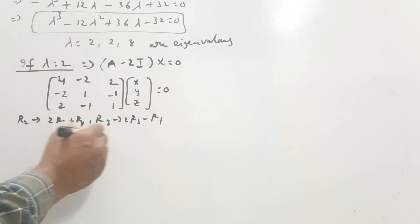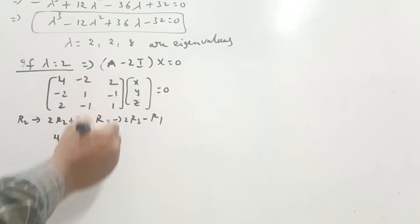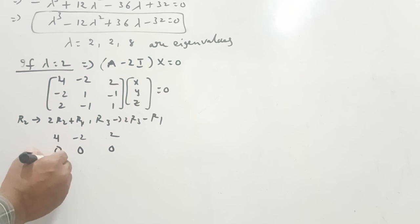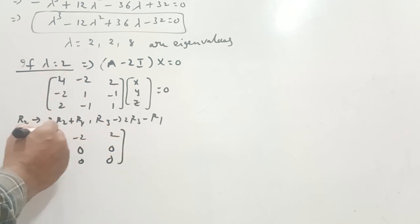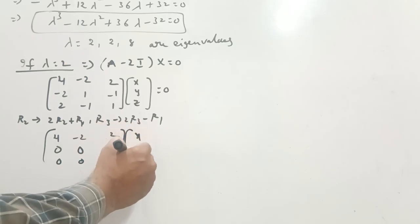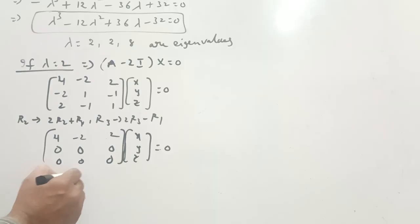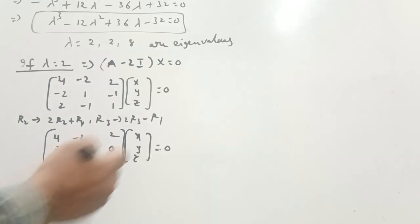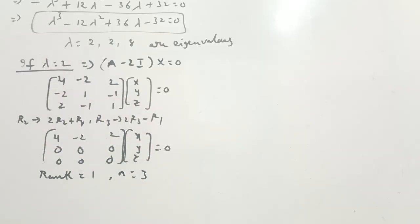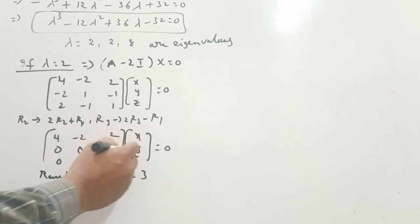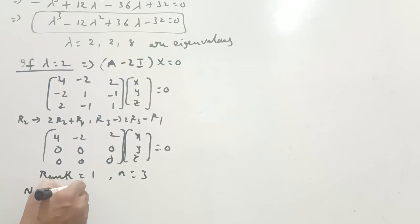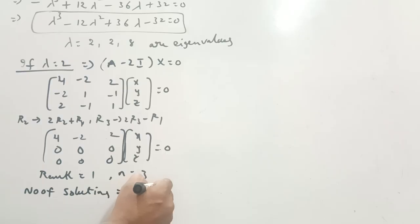After row reduction, rank r equals 1 and number of unknowns n equals 3. Number of solutions equals n minus r, that is 3 minus 1 equals 2. So we have to assume two solutions: let z equal k1 and y equal k2.